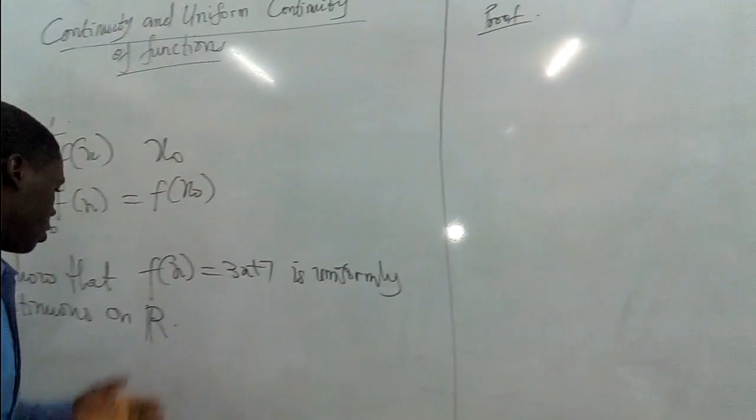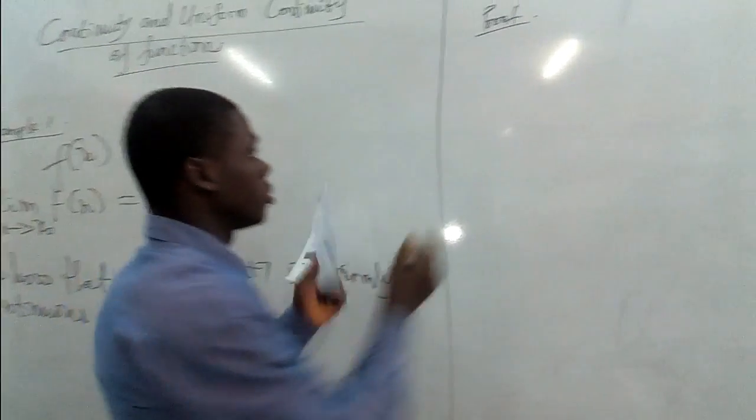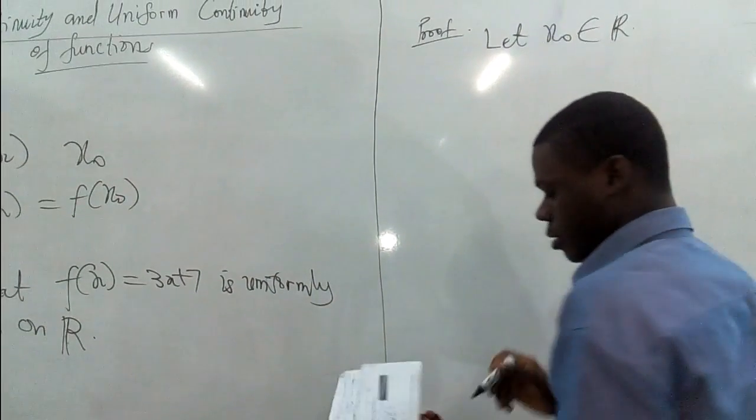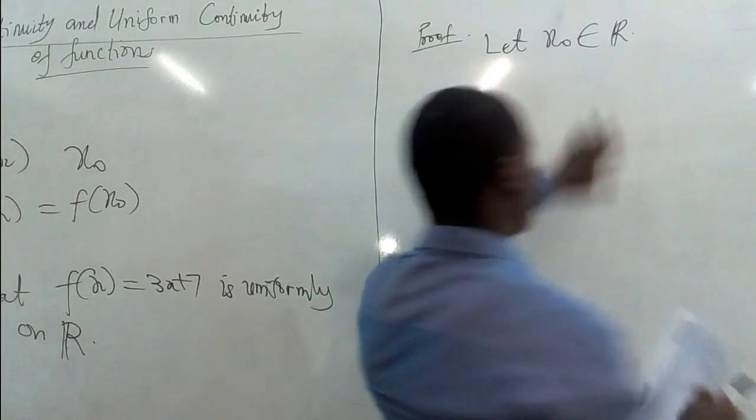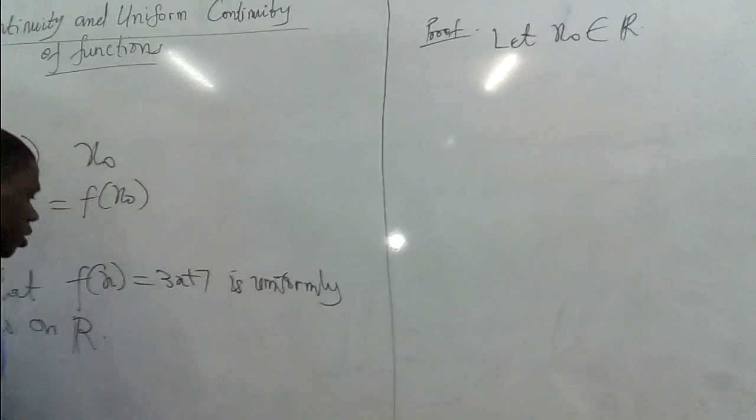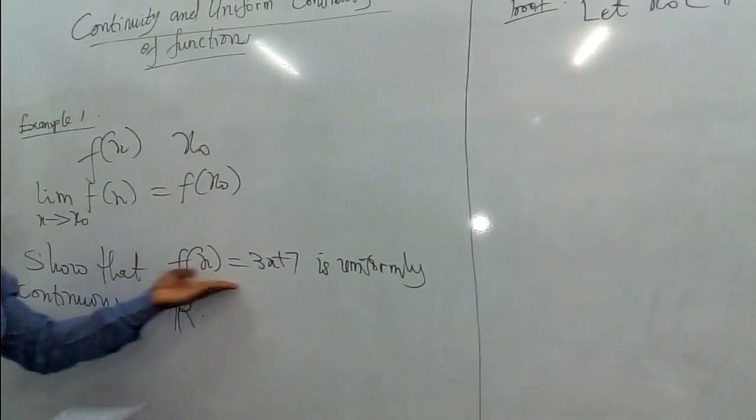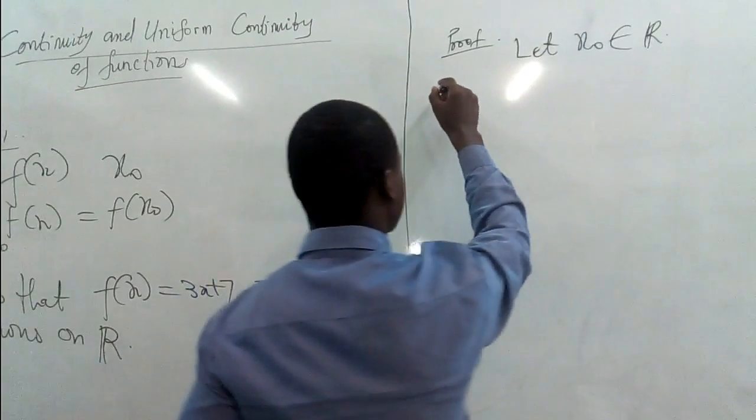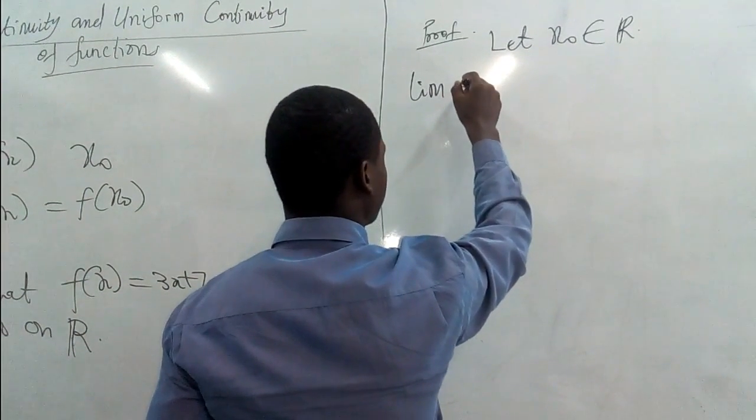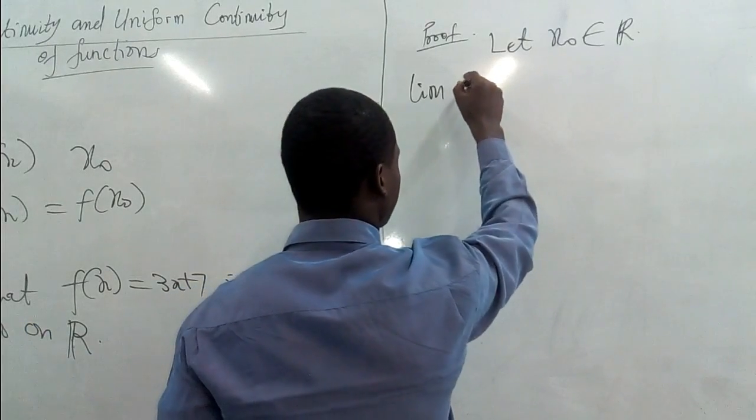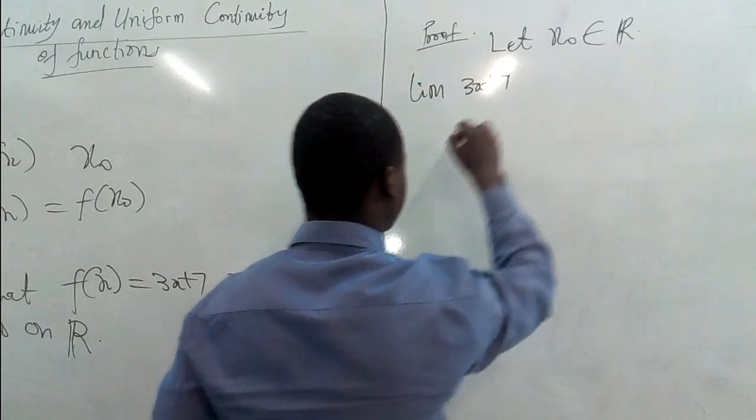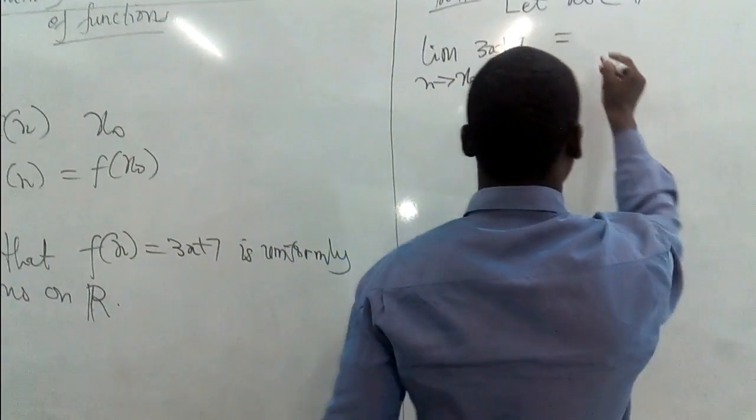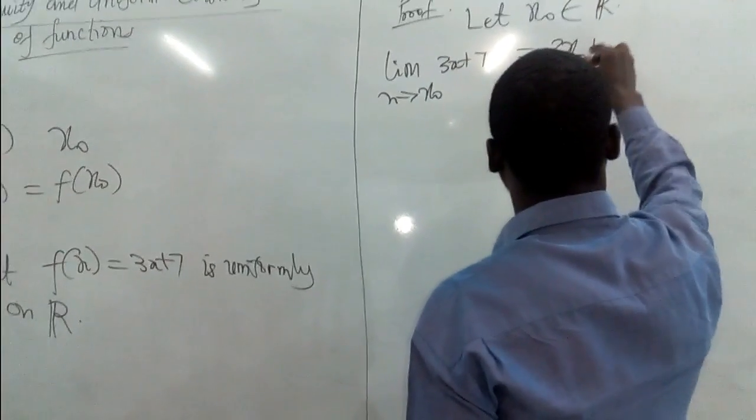So we begin by saying that let x₀ be a member of this set. So if x₀ is a member of this set, then it is possible that for this function is uniformly continuous. Then of course, it should be continuous at x₀. So the limit of this function 3x + 7 as x approaches x₀ should be equal to 3x₀ + 7.